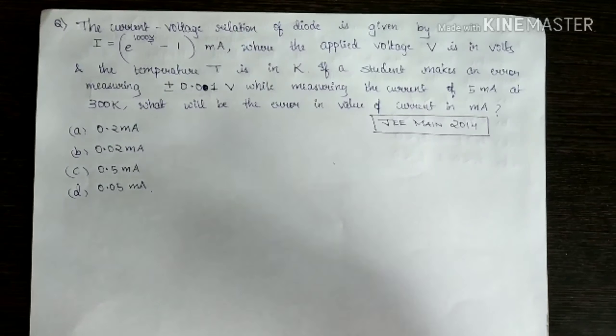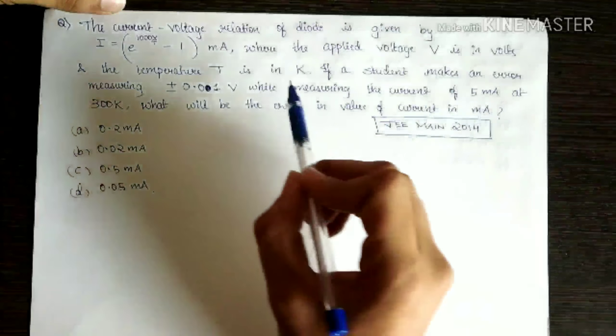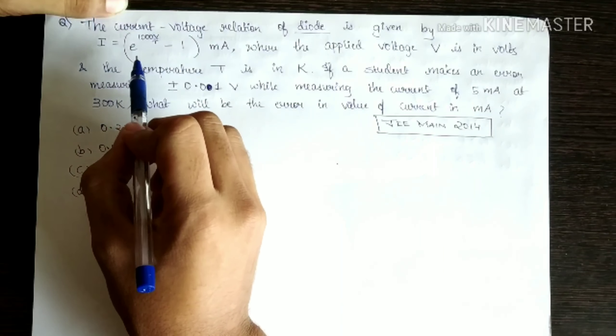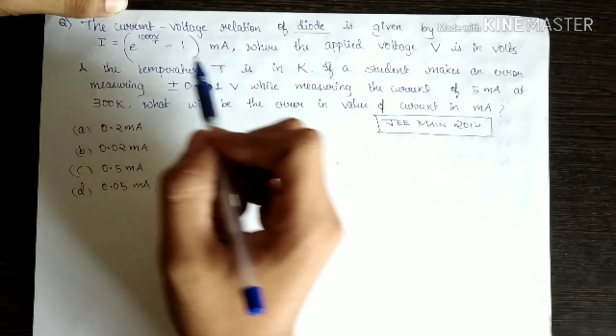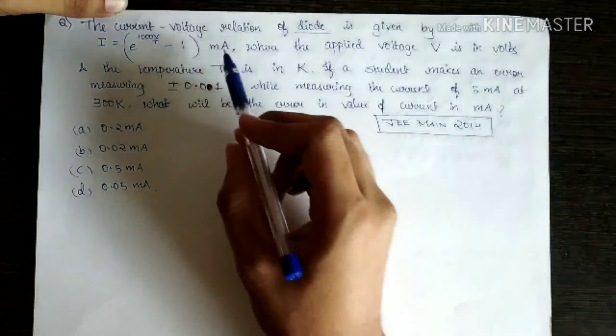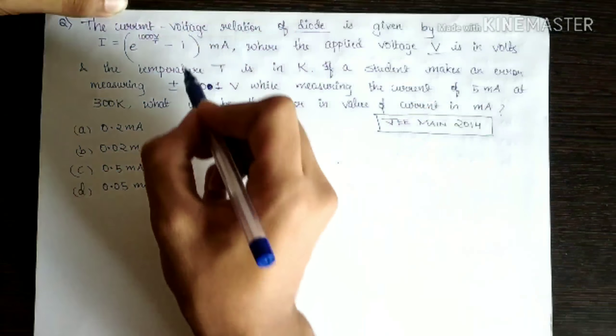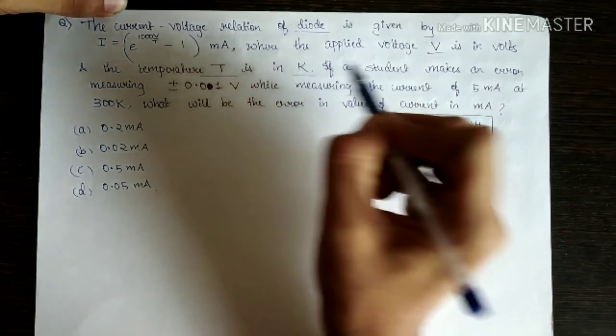If you don't get it, even if you get it, it's fine. Probably your method and mine may be different. So this question says, the current voltage relation of a diode is given by this equation: I = e^(1000V/T) - 1, which will come in milliamps, where the applied voltage is V and the temperature is T, which is measured in Kelvin.